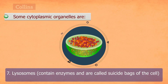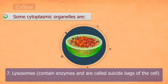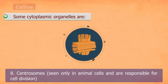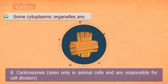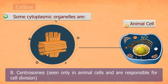Lysosomes. These contain chemical substances called enzymes that can digest materials present inside and outside the cells. They are also called suicide bags of the cell. Centrosomes are structures seen only in animal cells and play an important role in cell division.